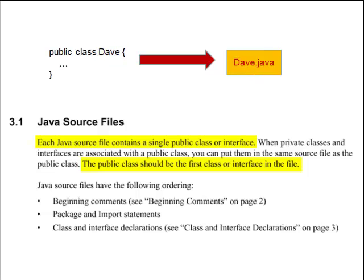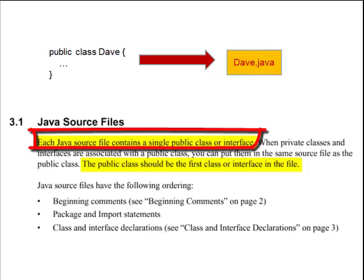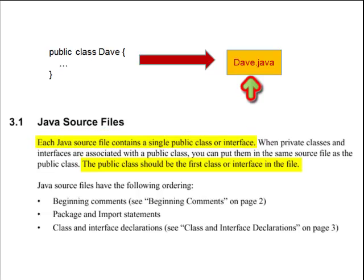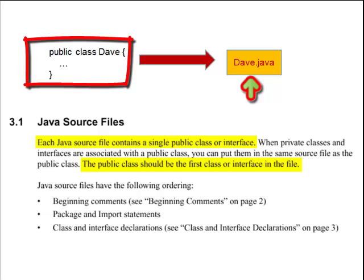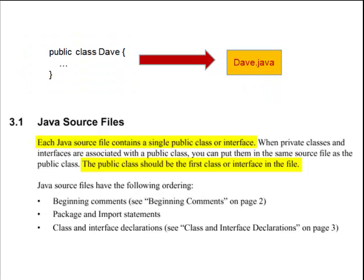Now, each Java source file is going to contain only a single public class or interface. So Dave.java is only going to have one public class, that being Dave. Now, you can put other private classes in the file and that's okay.